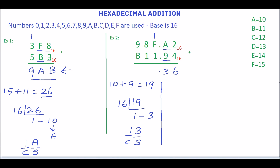Now we will add 1 plus F. F is equivalent to 15, plus 1. So 1 plus 15 plus 1 is 17. Since 17 is not a hex number, divide 17 by the base of hex, which is 16. The quotient is 1 and the remainder is 1, read from bottom to top. So the equivalent hex number is 11. In this, 1 is the sum and 1 is the carry.